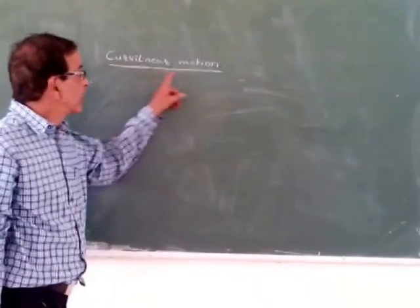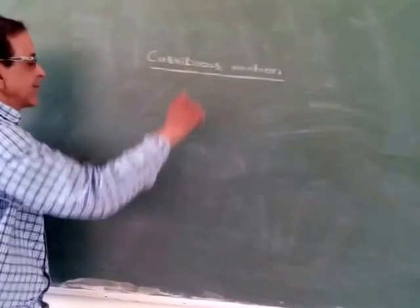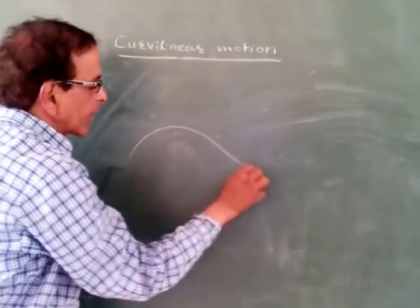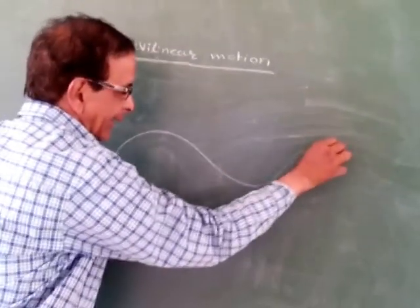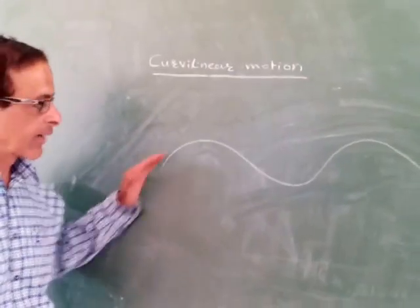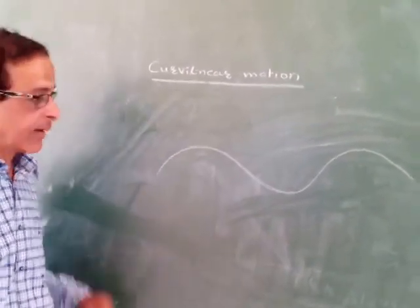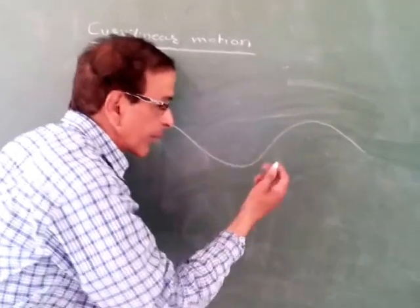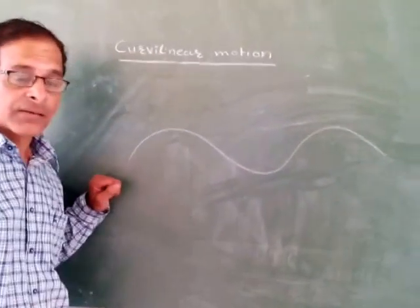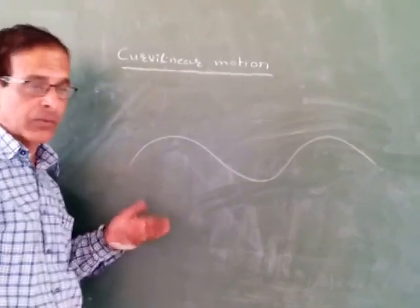Yes, circular motion — that is, the particle moves along a curved path. The path may be a parabola, ellipse, or even a straight line.